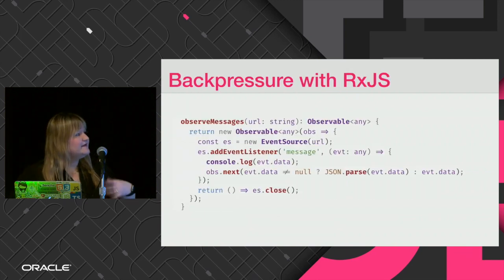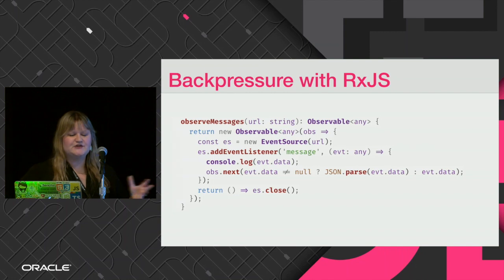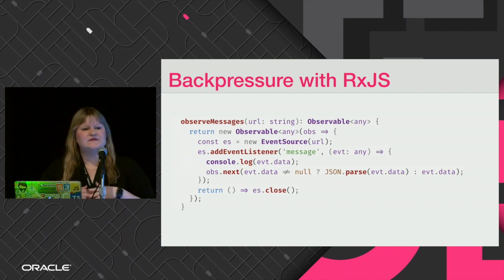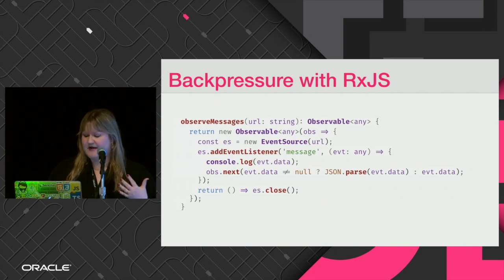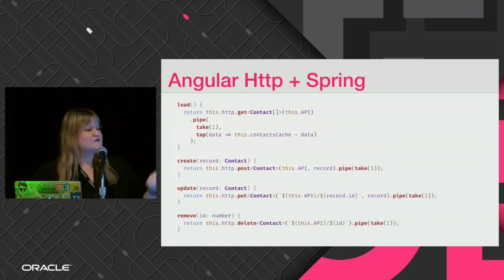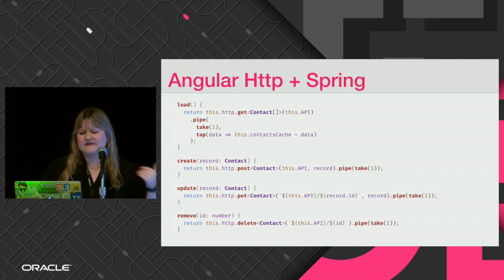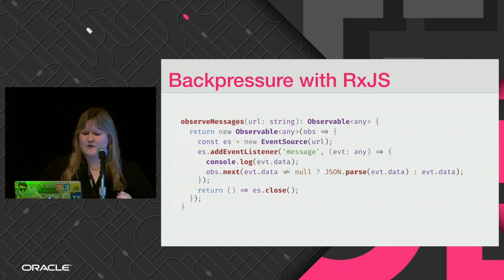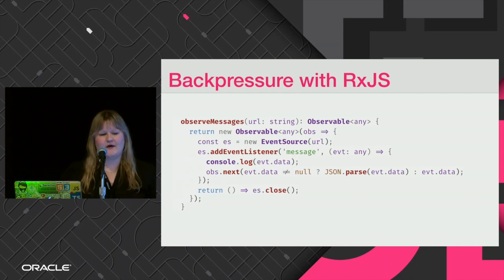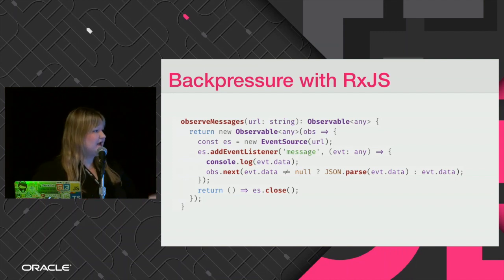That was how we handle Ajax requests. It doesn't matter if you're using Spring Reactive or Spring MVC — it's going to be similar. The only difference is if you're using Spring Reactive, you don't need the take(1). If it's a simple Ajax request for Spring MVC, you leave the take(1). And how do we handle back pressure with RxJS?